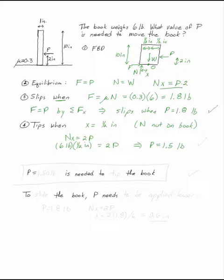Now I have two values for P: 1.8 and 1.5. If P starts at zero and increases until the book moves, clearly I'm going to get 1.5 first. So P equals 1.5 pounds is needed to tip the book. That's the answer.